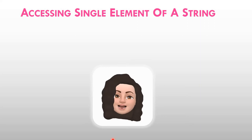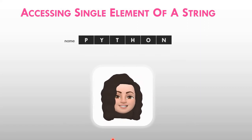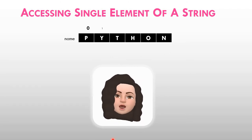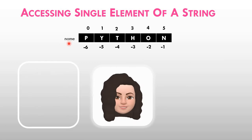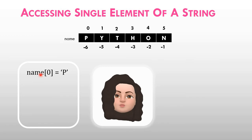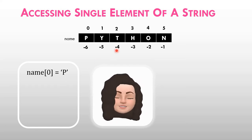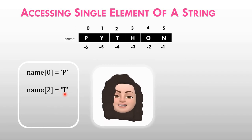How to access the individual characters of a string? Using index. Let's look at an example: name is equal to 'python'. Forward indexing: 0, 1, 2, 3, 4, 5. So name[0] gives you 'p', name[2] gives you 't', and name[5] gives you 'n'. For backward indexing, name[-5] gives you 'y', and name[-2] gives you 'o'.